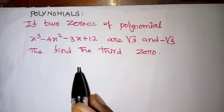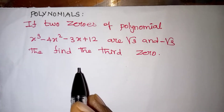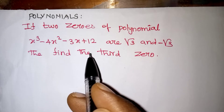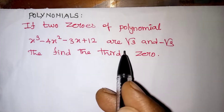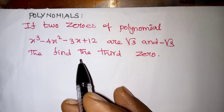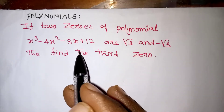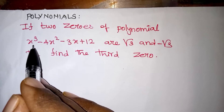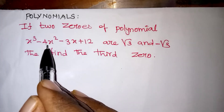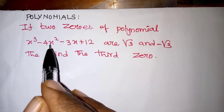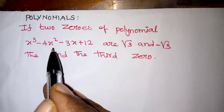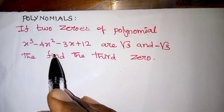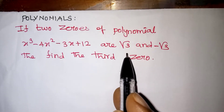Hi students, in this video we are going to learn two more questions from polynomials. If two zeros of the polynomial x³ - 4x² - 3x + 12 are given — it's a cubic polynomial. So for a cubic polynomial we have some conditions for sum of the roots, product of the roots, and everything. If we know those conditions we can find the answer very easily.